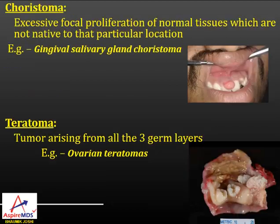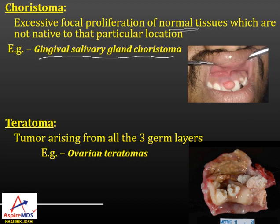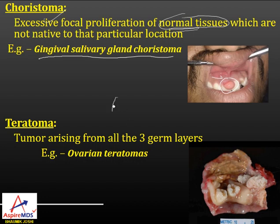There is also the term choristoma — excessive focal proliferation of normal tissue in an abnormal location, or a location not native to it. For example, gingival salivary gland choristoma appears like a fibroma, but on histopathological examination you find salivary gland tissue. The salivary gland tissue is normal for the body but its ectopic position makes it a choristoma.